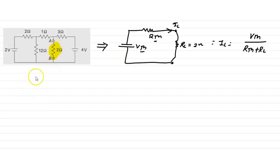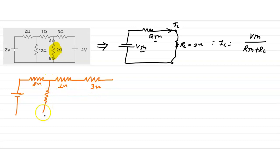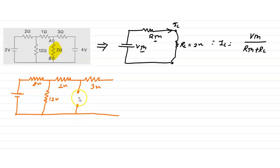First we remove this 2 ohm resistance and redraw the circuit. This is our 2 volt battery, this is 2 ohm resistance and this is 1 ohm resistance, this is 3 ohm resistance, and this is 12 ohm. We remove this resistance, mark it as open terminal, assume the voltage is Vth, and this is the 4 volt battery.